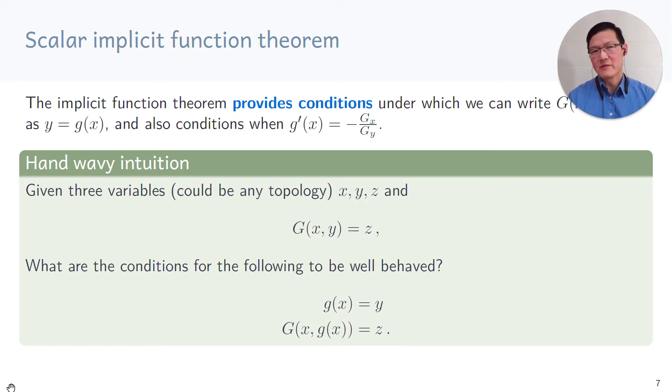Now let me give you a very hand-wavy intuition about what the implicit function theorem is. You can be given any three variables x, y and z. Whereas in the previous example, we looked at specifically x and y in terms of the real numbers and z was zero. In principle, x, y and z could be in any topology. So you're given an equation g of x and y evaluated to z. Implicit function theorem provides conditions for the following two equations to be well behaved. The first equation is an explicit expression of y in terms of little g of x. The second one is that you can actually substitute that equation into the original equation and still get the same answer.